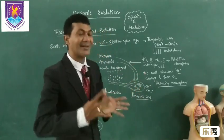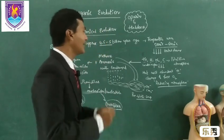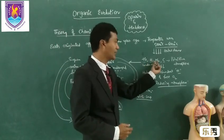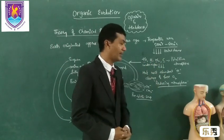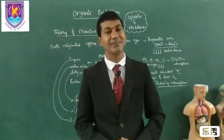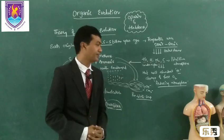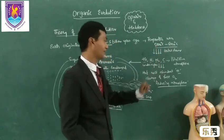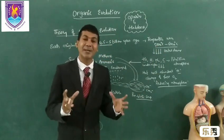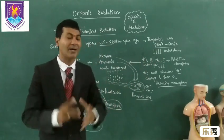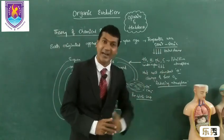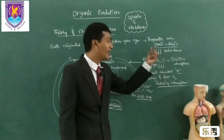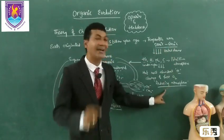As the earth started cooling down, the lighter elements on the earth's surface — like helium, hydrogen, nitrogen, and carbon — floated to the surface because of their light nature. At that time, water existed as vapour due to the very high temperature. The primitive atmosphere was very hot, with abundant hydrogen and no free oxygen. Because of this absence of free oxygen, the primitive atmosphere is known as a reducing atmosphere.